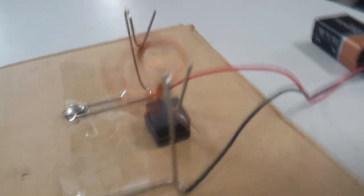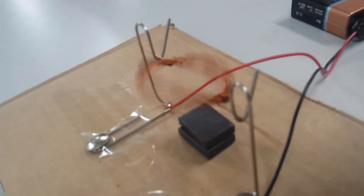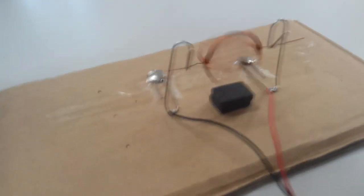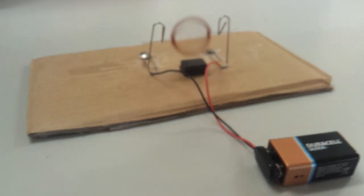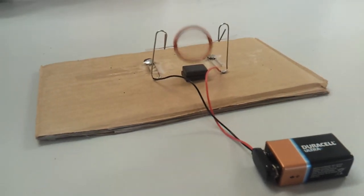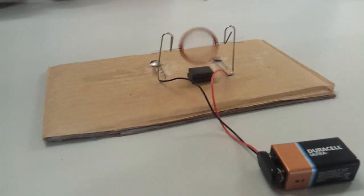This electromagnetic field then repels the permanent magnet underneath the coil, creating torque rotating the motor. For our simple DC motor, the current flows from the battery to the paper clips, then along the coil of copper and then down the other paper clip, completing the circuit.